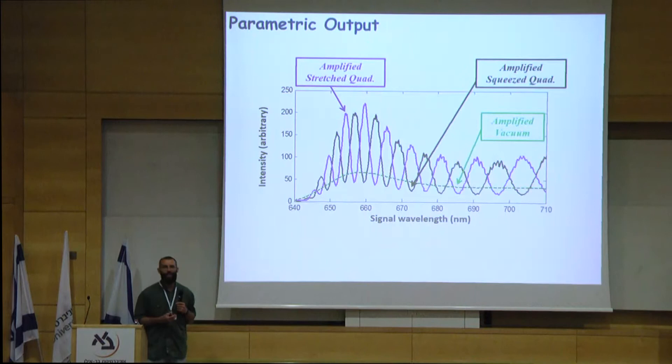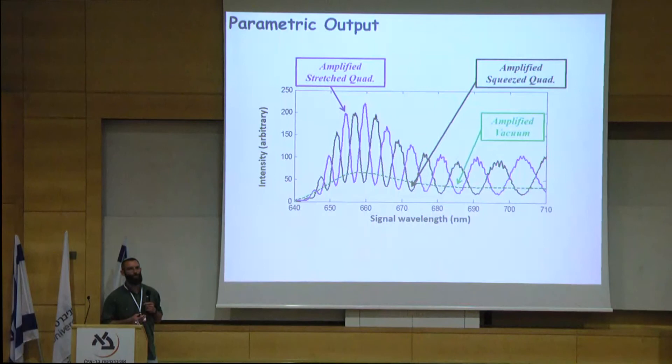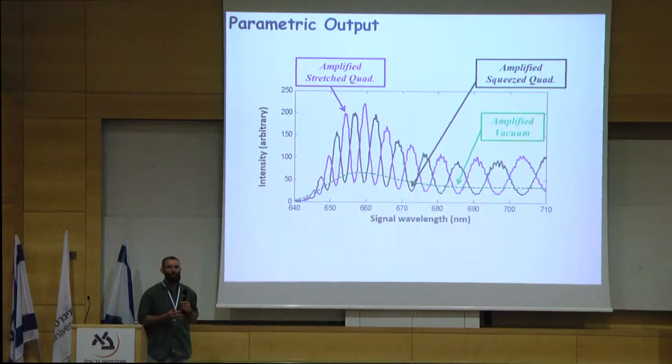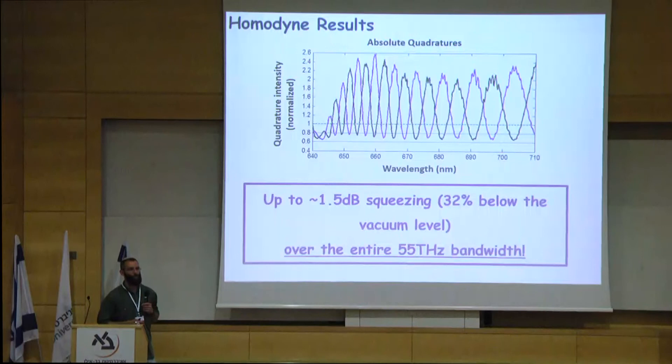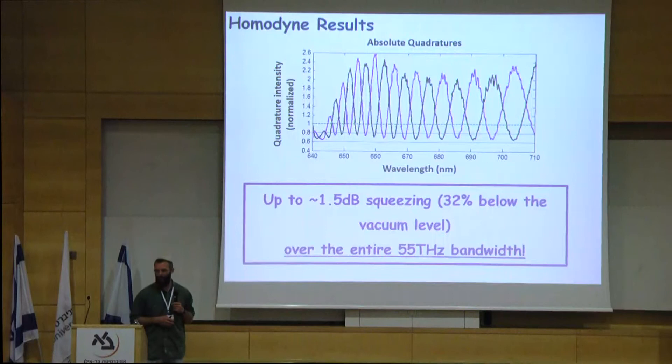You're probably asking yourselves what exactly are the fringes. They are due to dispersion inside the system, so that different frequency modes see different delays and arrive at the homodyne measurement such that for some frequencies we measure the squeezed quadrature and for others we measure the stretched quadrature. But of course, we can tune the phase of the pump, or the local oscillator, to measure any quadrature we like and scan over the entire spectrum. After normalization, we can see that we measure up to 1.5 dB squeezing — 32% below the vacuum level — over the entire 55 terahertz spectrum. Obtaining a measurement like this with the standard homodyne technique would be practically impossible.